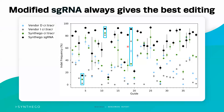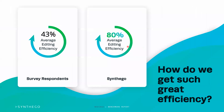Talking about editing efficiency — what does a good editing efficiency look like? It obviously differs for different people and different reagents. But from the benchmark report, an average editing efficiency from the people we talked to was about 43%. However, when we do experiments, we find that our average editing efficiency is about 80% — a huge difference. Using the best reagents is a really key part of doing any edit. The higher the editing efficiency you get at the pool stage, the better off you'll be all the way through the workflow, and the better chances you'll have of getting a useful population of cells.